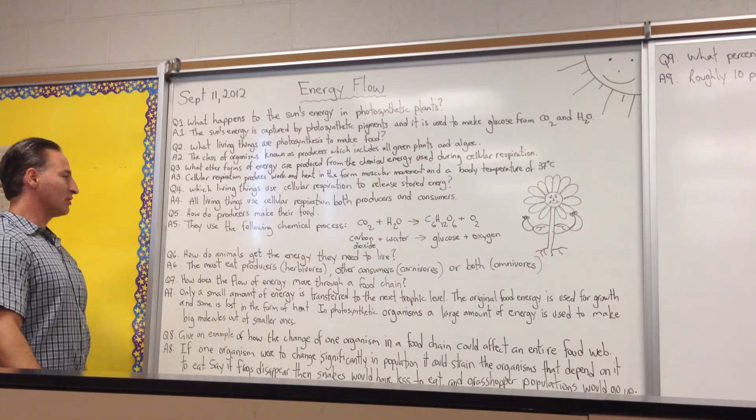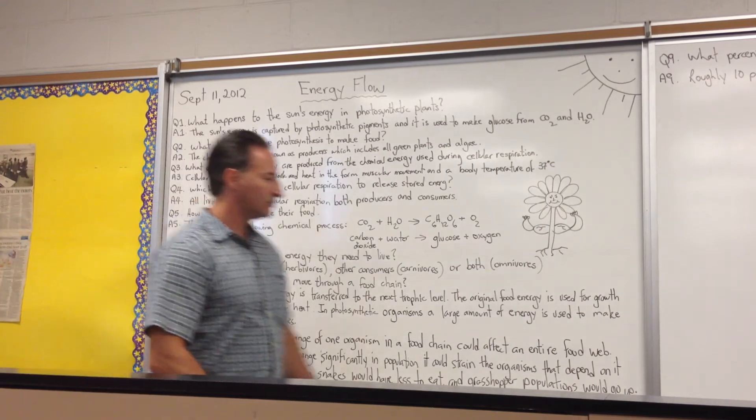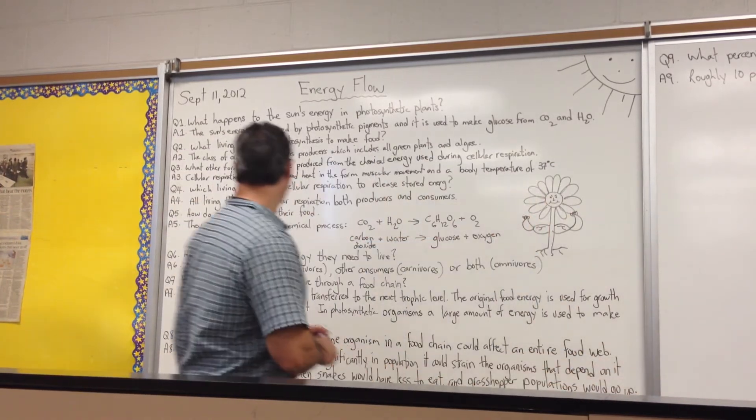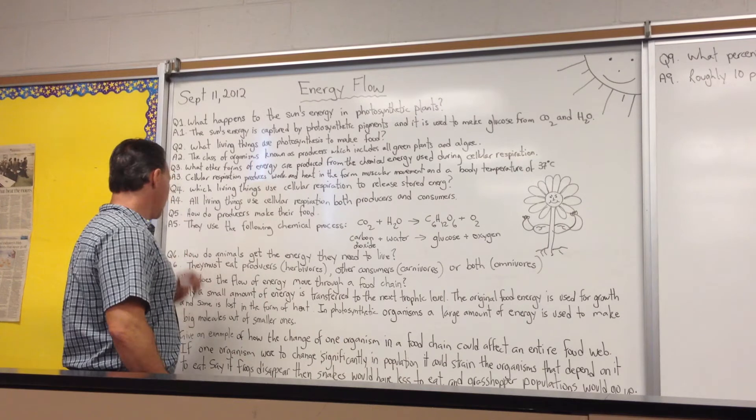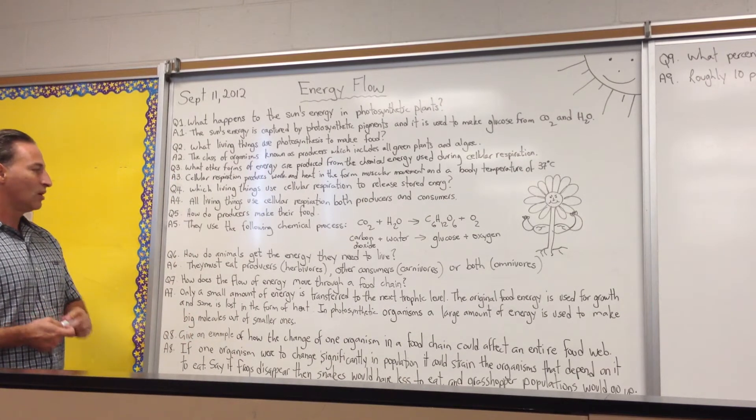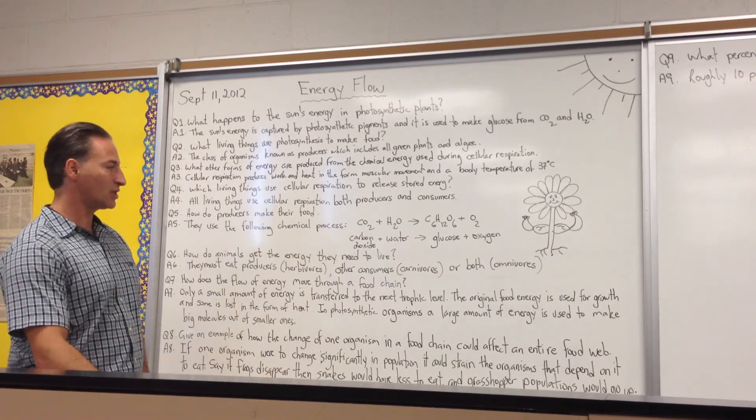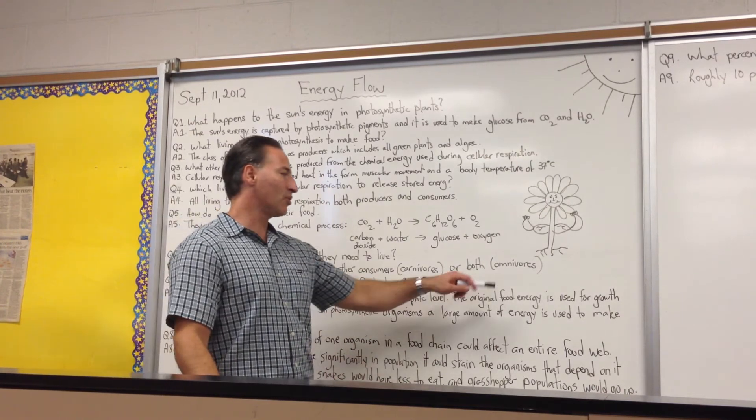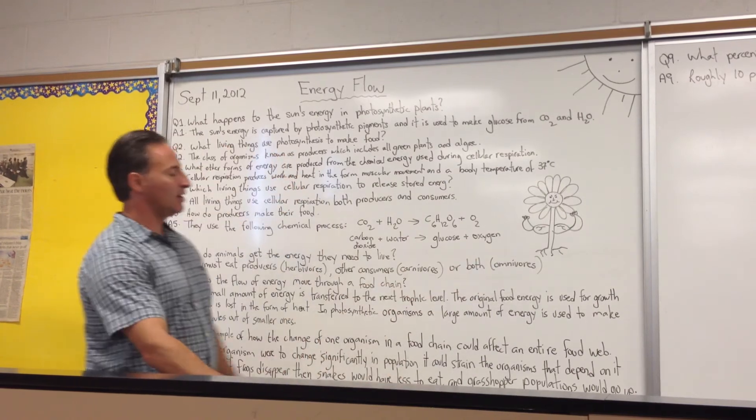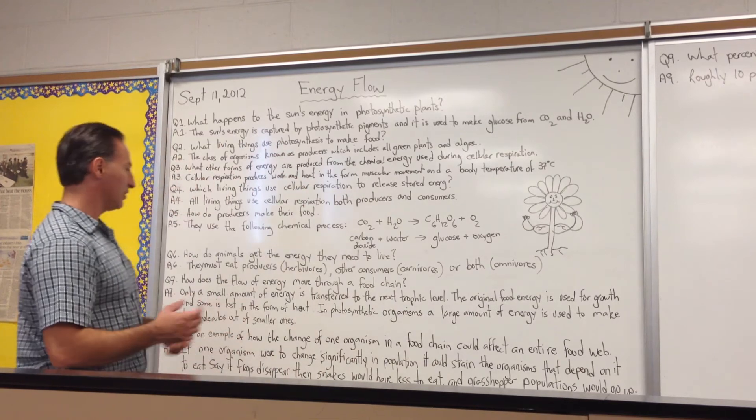How do animals get energy that they need to live? They must eat producers. So if they do, they're called herbivores. Other consumers, if they do that, they're called carnivores because they eat flesh. Or both. If they eat both plants and other animals, then they're omnivores, meaning they eat everything.